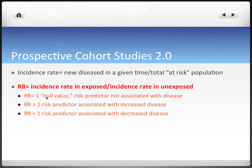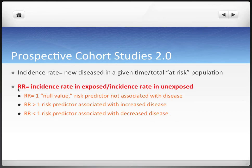If the relative risk equals one, the incidence rates are no different between exposed and unexposed, so it's not associated with disease. If the incidence rate in the exposed group is greater, that means there's an increased risk of developing disease from exposure to this thing. And if it's less than one, that means it's actually associated with decreased disease, so that risk predictor might actually be a treatment.